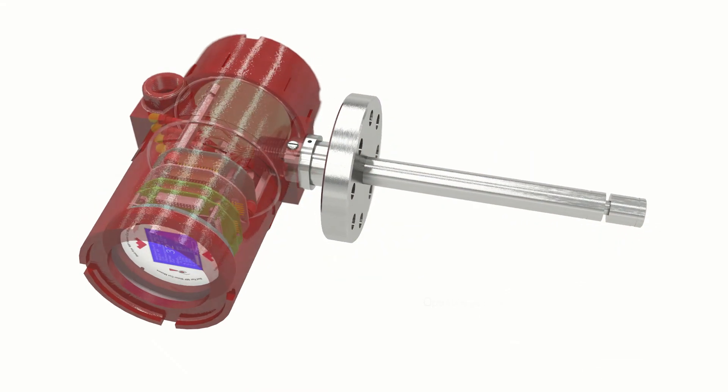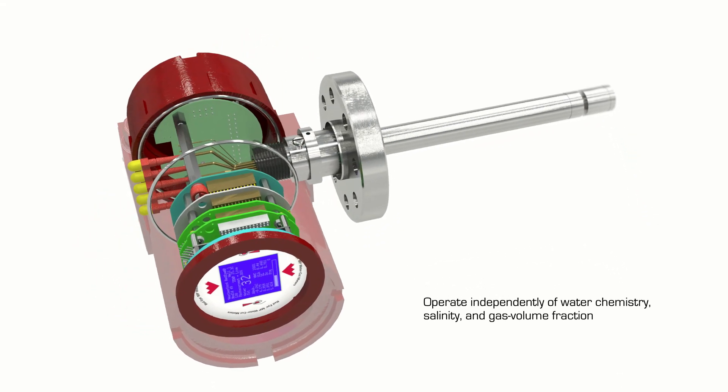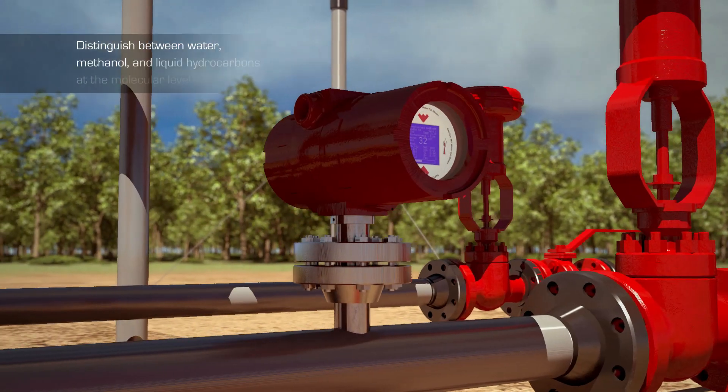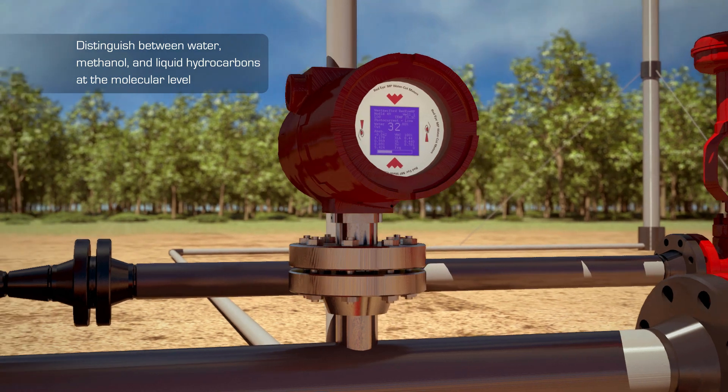These field-proven meters operate independently of water chemistry, salinity, and gas volume fraction, and they can distinguish between water, methanol, and liquid hydrocarbons at the molecular level.